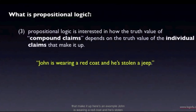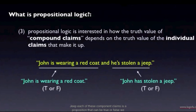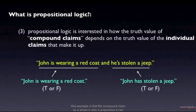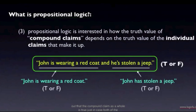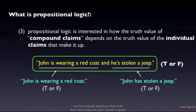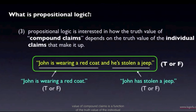Here's an example: 'John is wearing a red coat and he's stolen a jeep.' This is a compound claim composed of two propositions — 'John is wearing a red coat' and 'John has stolen a jeep.' Each can be true or false. From the standpoint of propositional logic, the compound claim as a whole is also a proposition that can be true or false. The compound claim as a whole is true just in case both component claims are true; if either one is false, the compound claim is false. So if John has stolen a jeep but is actually wearing a blue coat, the compound claim is false. This illustrates that propositional logic is concerned with the way the truth value of compound claims is a function of the truth value of the individual component claims.